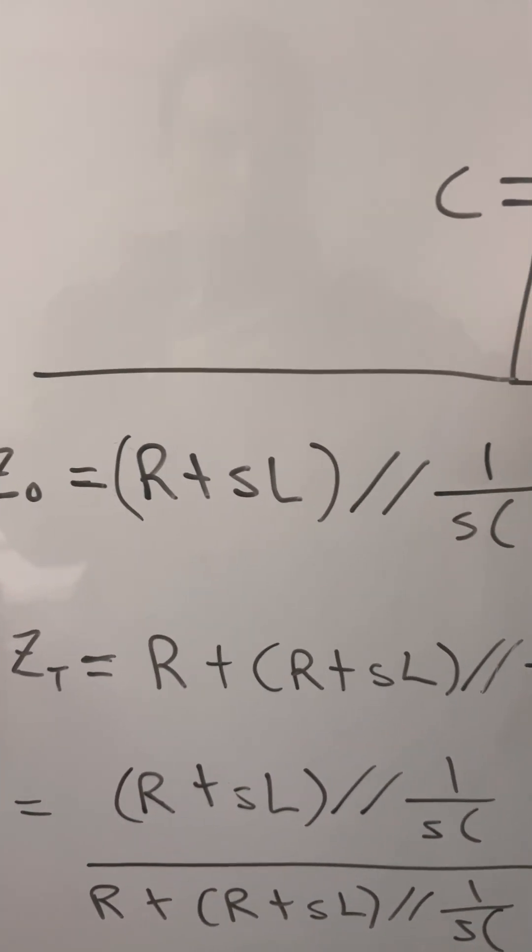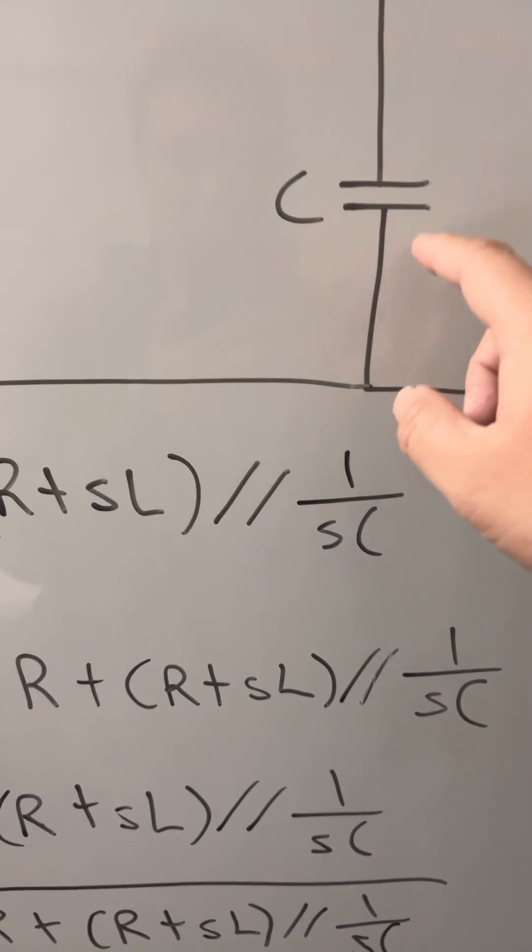That's your impedance. R plus L, that will be in parallel with C. So it will be 1 over SC.